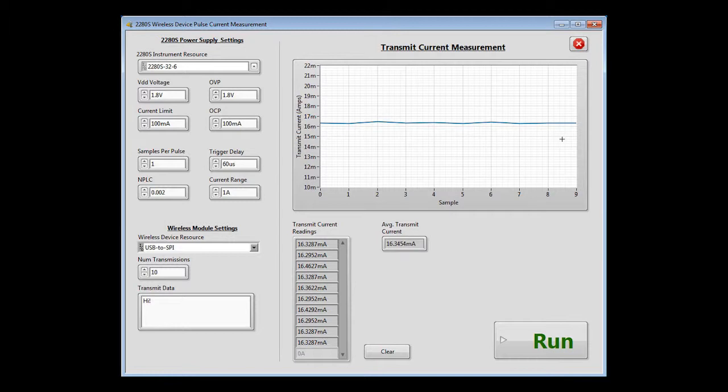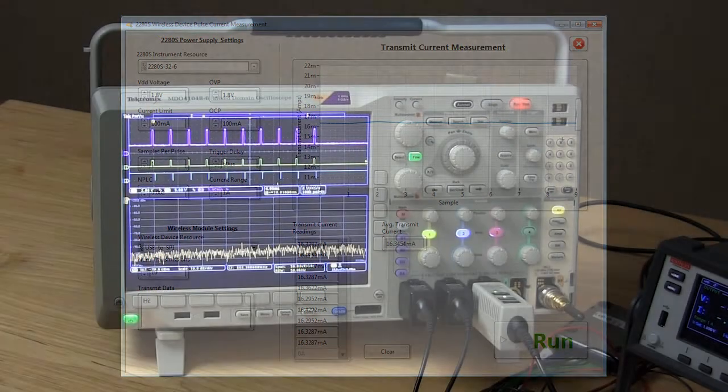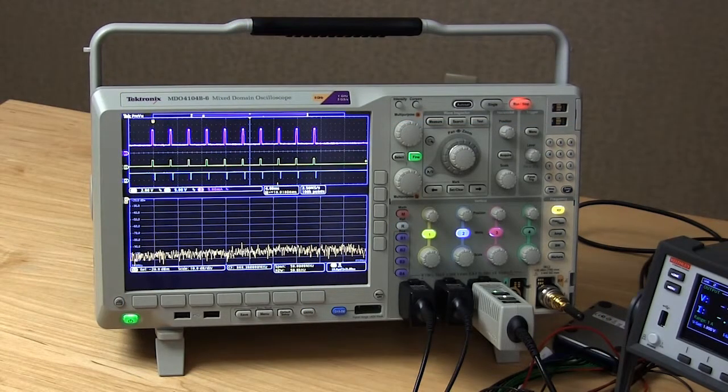Next, let's take a look at the scope to verify our measurements. Looking at the screen of the Tektronix MDO4104B, we can see three traces.